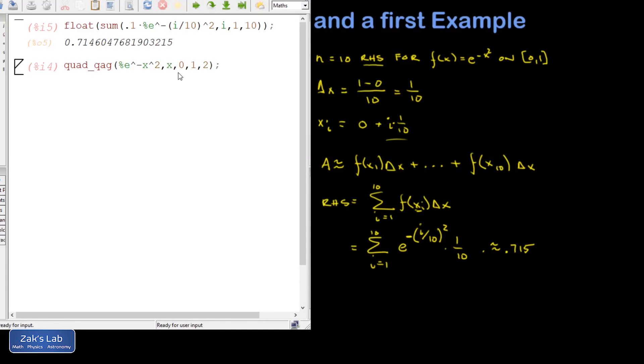So we're back in Maxima and what I've done is write down quad_qag. So this is the numerical integration algorithm in Maxima, and I write my function %e^(-x²) as x goes from zero to one. The last number here is just the algorithm that I chose. You can choose any algorithm from number one to number six. They're all different numerical ways of getting an approximation to an integral, and these are good to like 10+ decimal places, so way beyond what we're really concerned with.